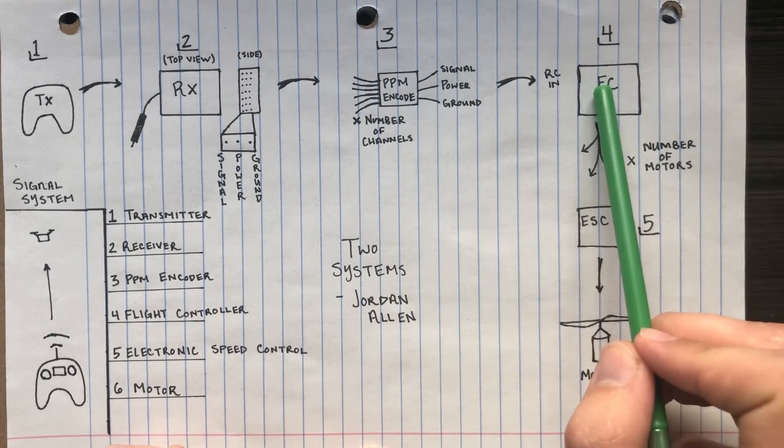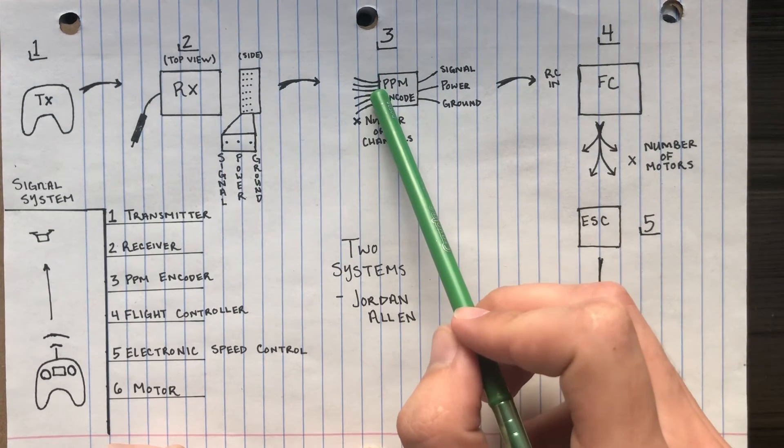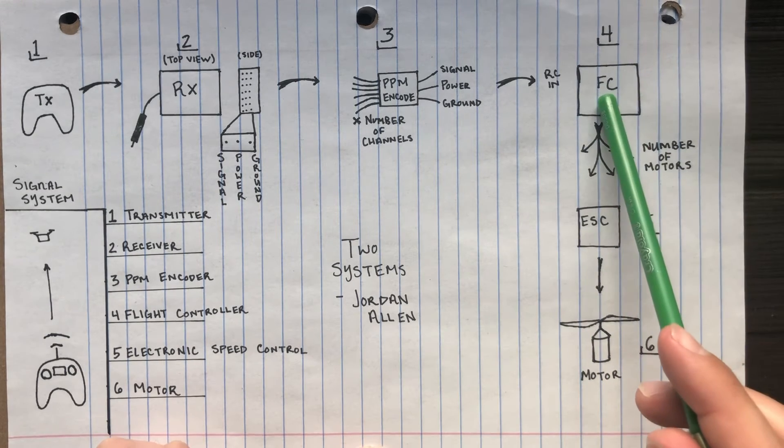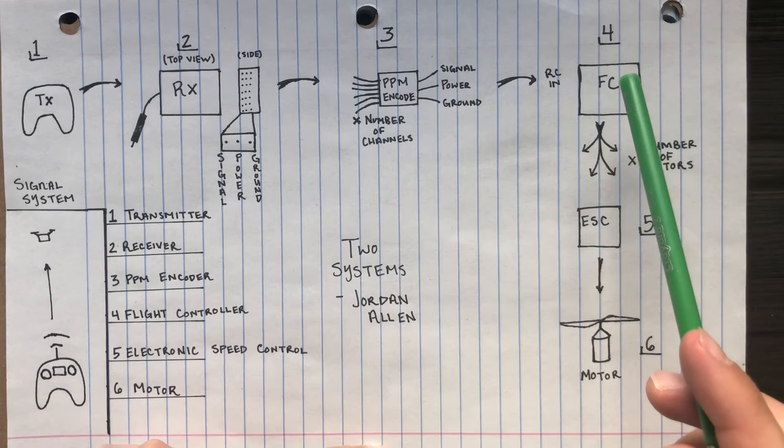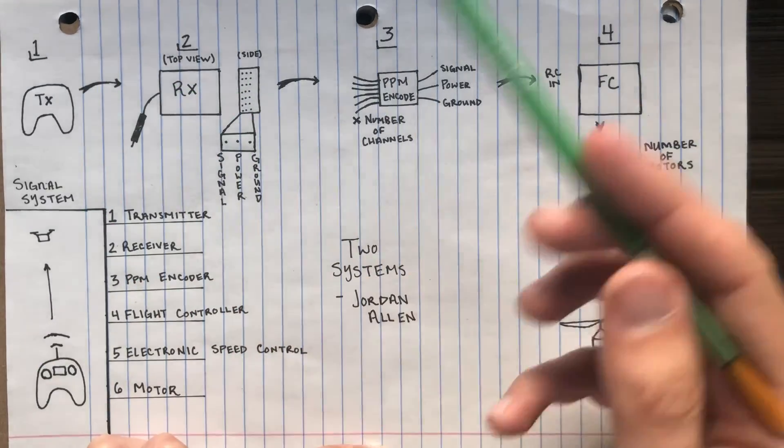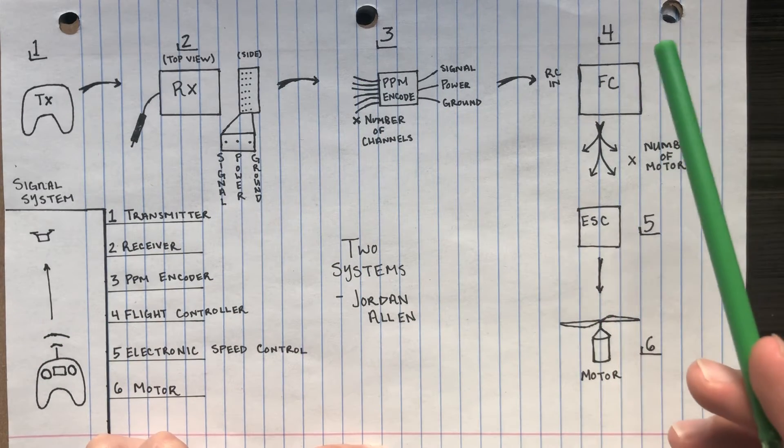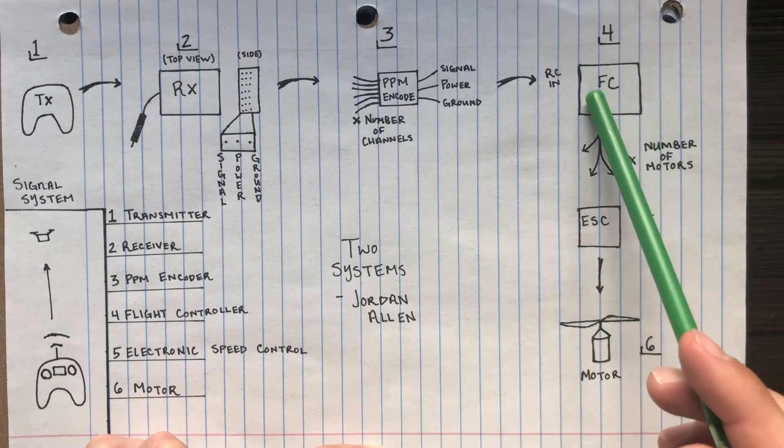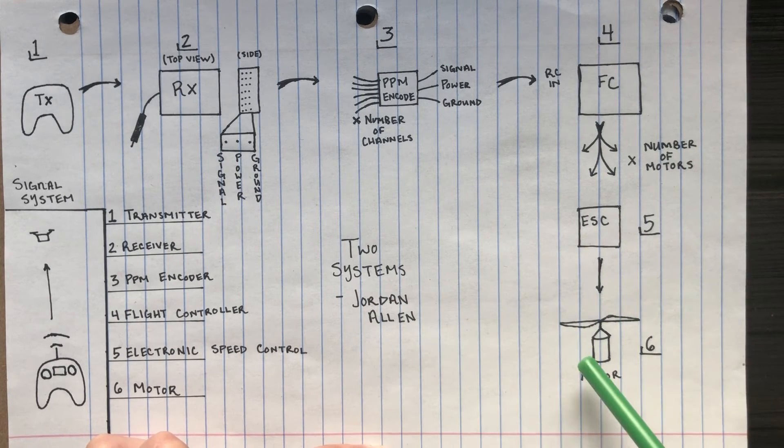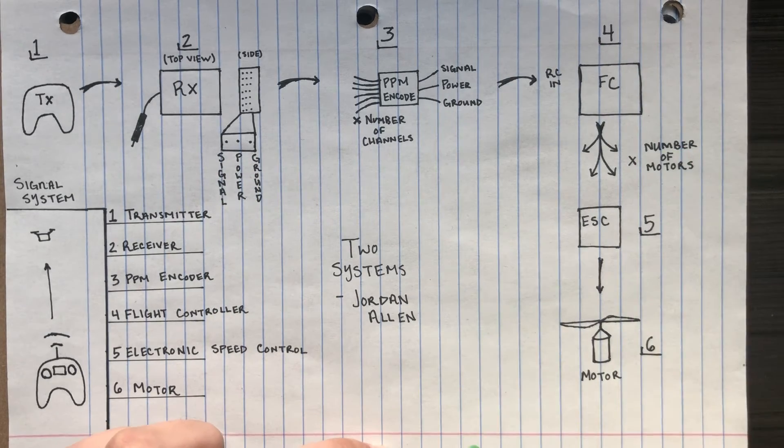Once the flight control has it, it can then send the information received from the PPM encoder to each of the respective engine or motors. Now what the flight controller is needed is the receiver can only say thrust or yaw or turn left turn right. The flight controller then does the math needed to make sure each motor spins at the certain speed it needs to make the motor fly in the direction needed.